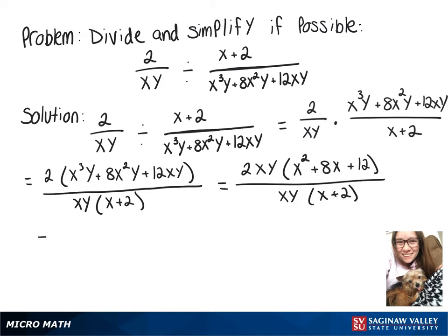Now on top, we have a quadratic that we can factor, so we still have 2xy and then that will factor into x plus 6 times x plus 2. All of that is still over xy times x plus 2.